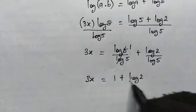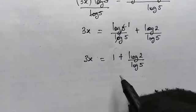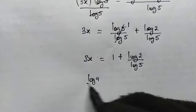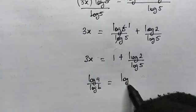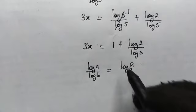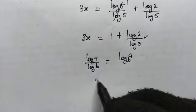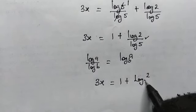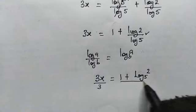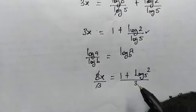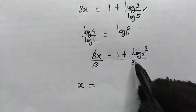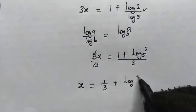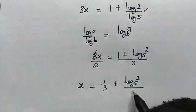So we have 3x is equal to 1 plus log of 2 divided by log of 5. We know this important logarithmic law: log of a divided by log of b is equal to log of a to the base b. Applying it here, this becomes 3x equals 1 plus log of 2 to the base 5. Dividing both sides by 3, our solution is x equals one-third plus log base 5 of 2, divided by 3.